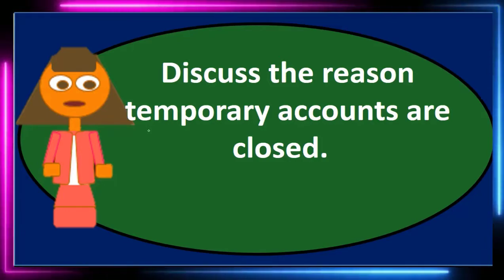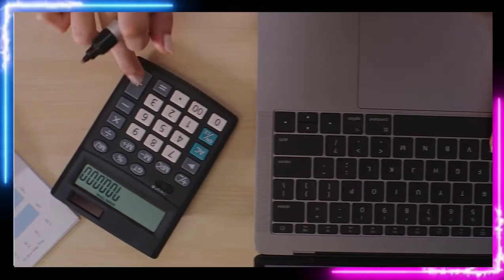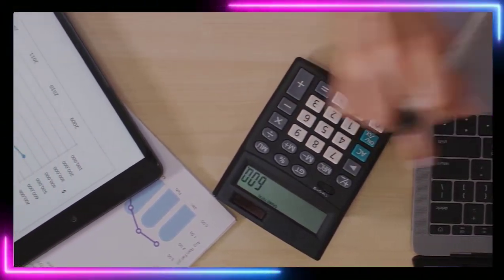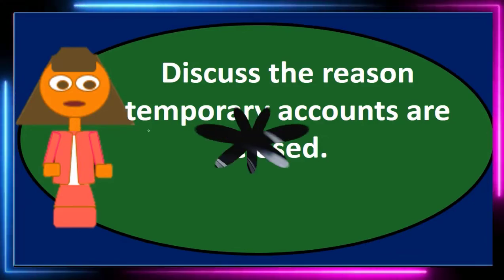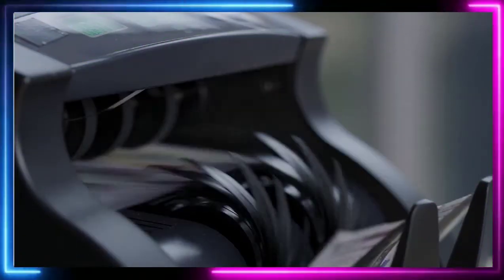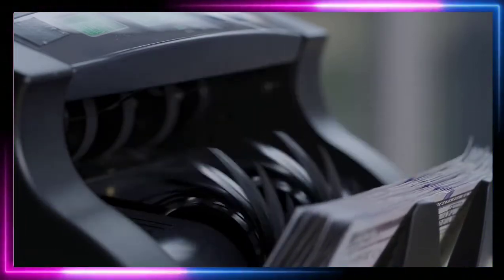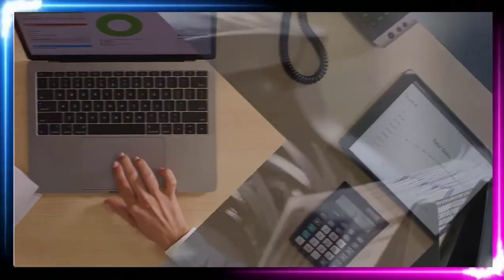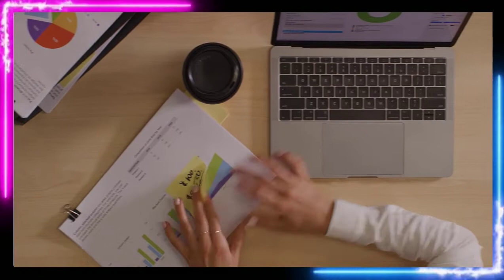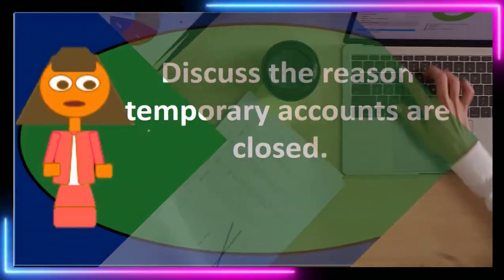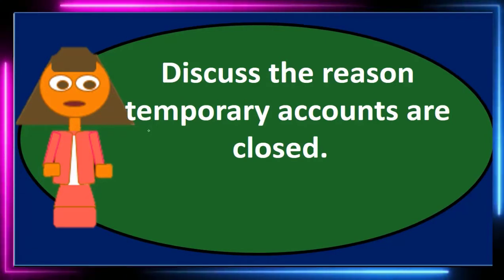We're going to take all those accounts and do whatever we need to do to bring them down to zero, putting the difference into the capital account. Revenue has a credit balance, so we debit it to make it go to zero. Expenses have debit balances, so we credit them to bring them to zero. The draws account has a debit balance, so we credit it to zero. All temporary accounts — income statement accounts, draws, and dividends — will now be zero.